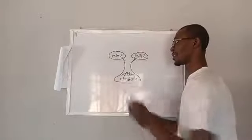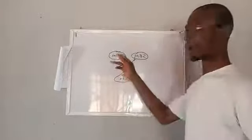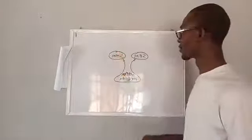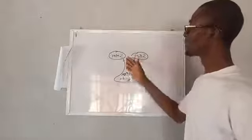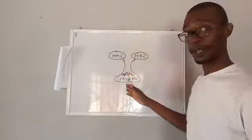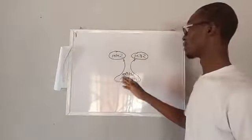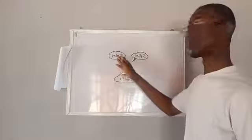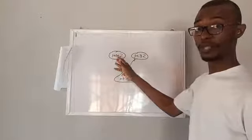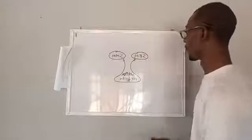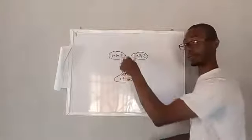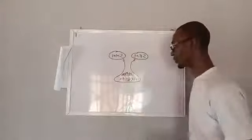With search engine and social media marketing, people can automatically have access to your webpage. And from your webpage, people can have access to your social media platforms. That's why we have these arrows going in and out.